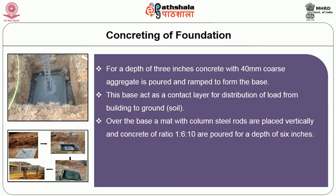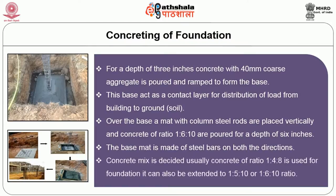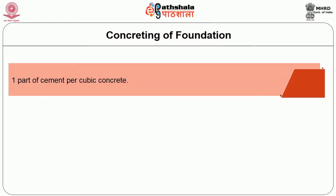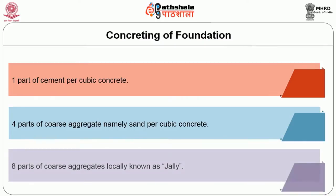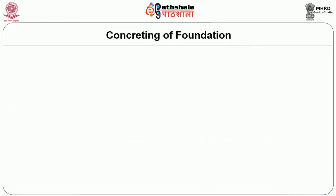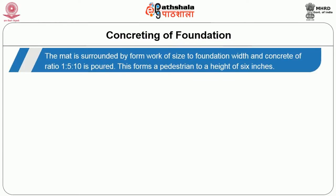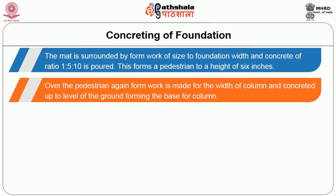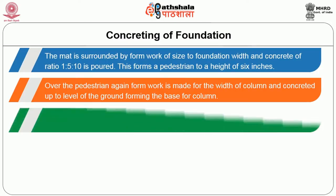Over the base, a mat with steel rods placed vertically is set as shown in the figure, and concrete of ratio 1:6:10 is poured for a depth of six inches. The base mat is made of steel bars running in both directions. Concrete mix is usually of ratio 1:4:8 and can be extended to 1:5:10 or 1:6:10. Here, one part is cement, four parts is fine aggregate (sand) and eight parts is coarse aggregate (jelly). The mat is surrounded by formwork sized to the foundation width, and concrete is poured to form a pedestal to a height of six inches. Over the pedestal, formwork is made for the width of the column and concreted up to ground level, forming the base for the column.